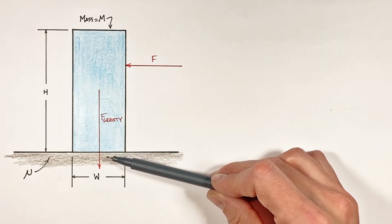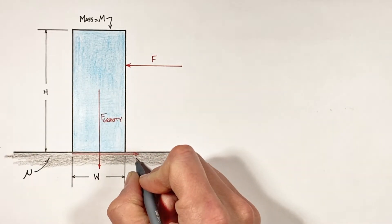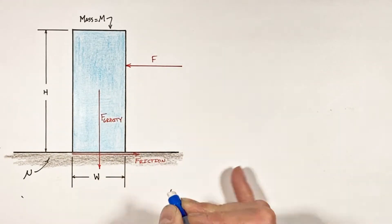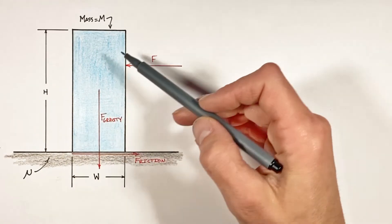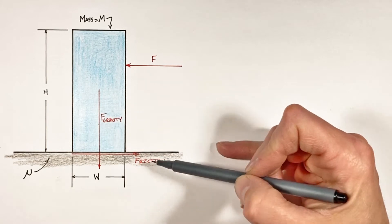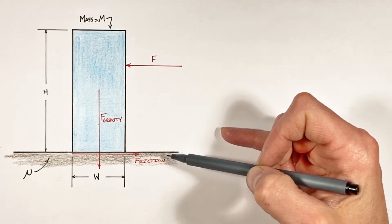So if we're trying to push the block to the left, friction is going to be acting to the right. Now regardless of whether the block is sliding against the ground or tipping over, these are the three forces which are going to be acting against the block.